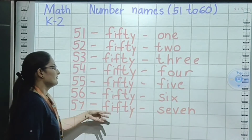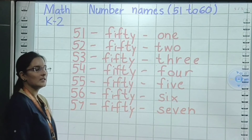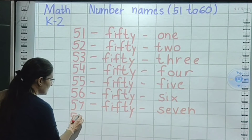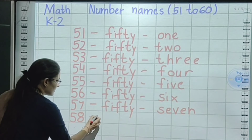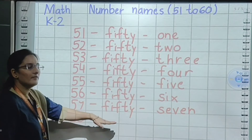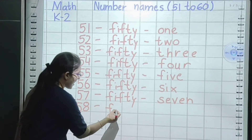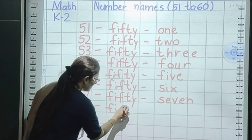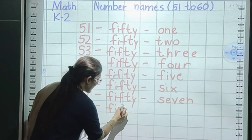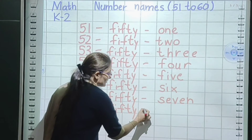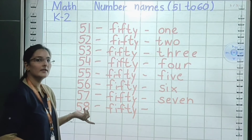Next number: 57. Small sleeping line. Again same spelling: F, I, F, T, Y — fifty. Small sleeping line. Spelling of 7: S, E, V, E, N — seven. So 57 is fifty-seven.